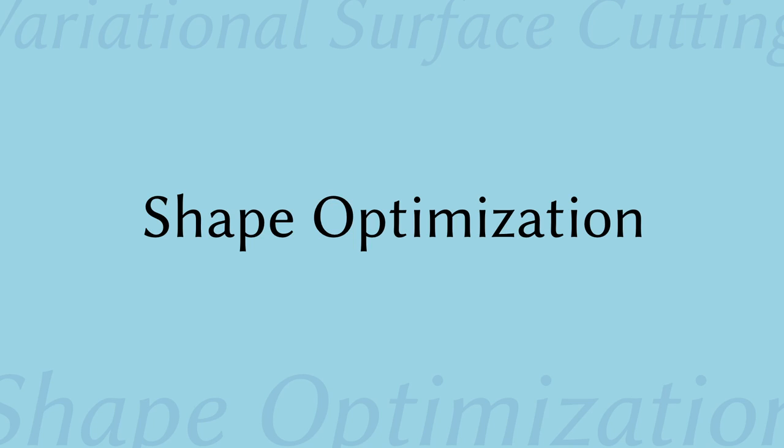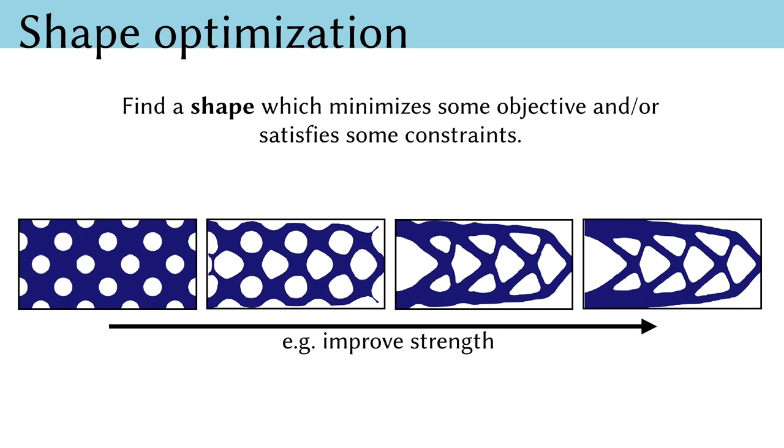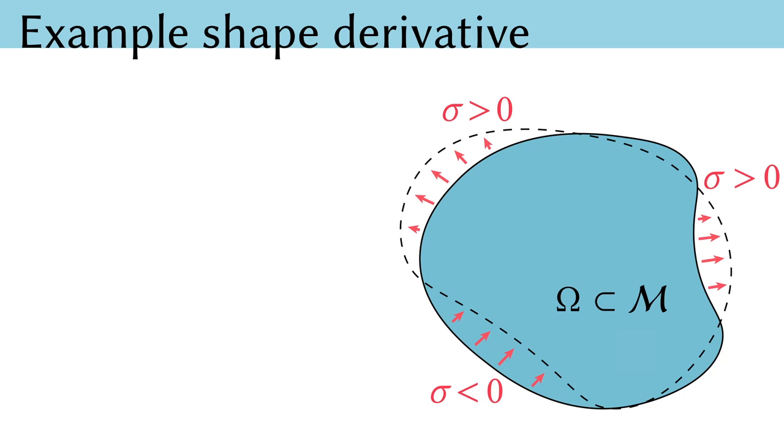As it turns out, the machinery of shape optimization has been developed for exactly this situation. In shape optimization, we seek a shape which minimizes some objective functions or satisfies some constraints. These techniques have been applied commonly within mechanical engineering and more recently within the computer graphics community. As you might expect, the key ingredient in shape optimization is the shape derivative. I think that the easiest way to understand shape derivatives is by example. Suppose we have a shape omega which we consider deforming with a perturbation sigma. Sigma is a scalar function along the boundary of the shape, where positive values indicate outward motion and negative values indicate inward motion.